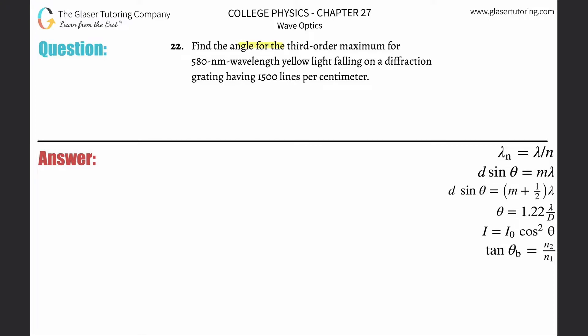Number 22: Find the angle for the third-order maximum for 580 nanometer wavelength yellow light falling on a diffraction grating having 1500 lines per centimeter. The first thing, anytime they tell you the number of lines per length, you can always find the distance between those lines or between those slits.